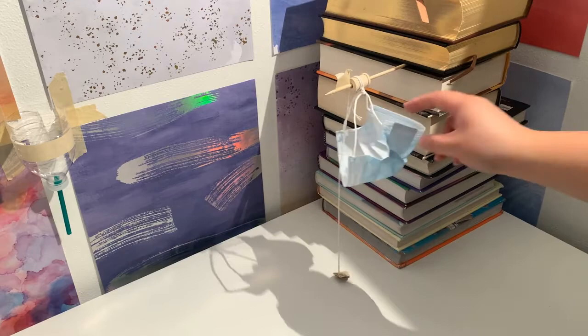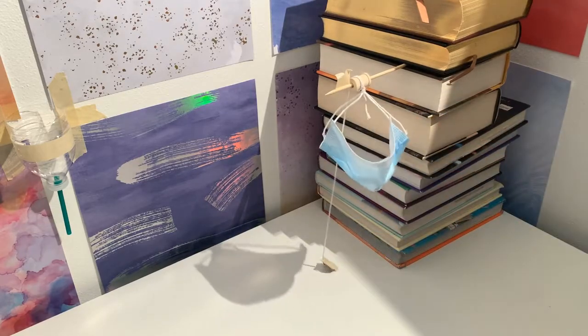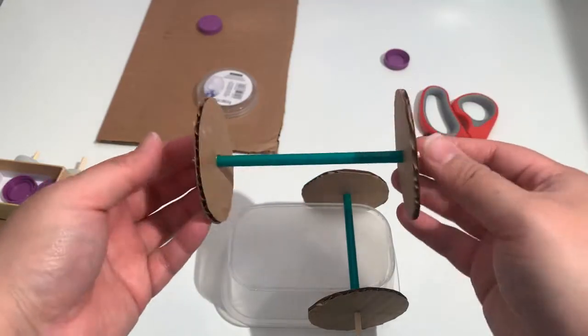At the core of our Rube Goldberg machine project are six simple machines, physics, engineering, and problem solving. This means you get to invent and explore and experiment in order to create your very own Rube Goldberg machine.